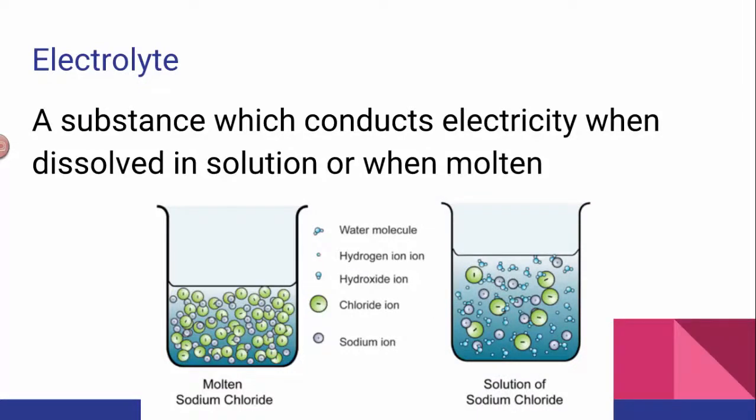So the definition of an electrolyte is pretty simple. It's a substance that conducts electricity if you dissolve it in water or if you melt it. So if it's molten or in solution, it will conduct electricity. If it does, that is an electrolyte.